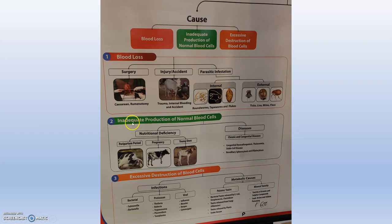Moving to the second cause — inadequate production of normal blood cells — this can mainly be due to any disease condition or nutritional deficiency. In nutritional deficiency, during the peripartum period, that is after parturition, animals will have higher demands, and if we are not providing adequate food, this can lead to decreased nutritional intake. In pregnancy, nutritional demand is high, and in young ones, nutritional deficiency is very common.